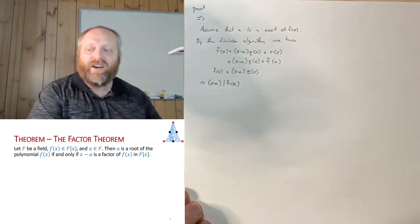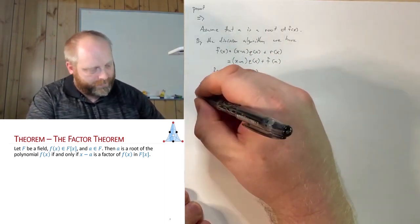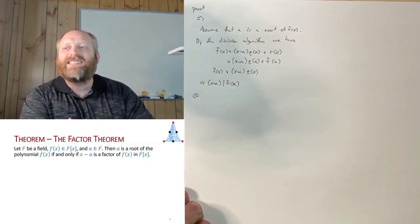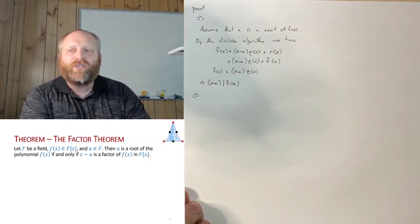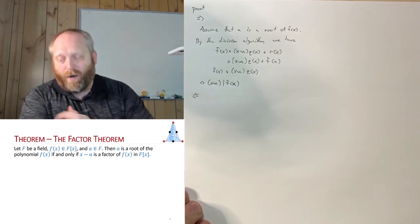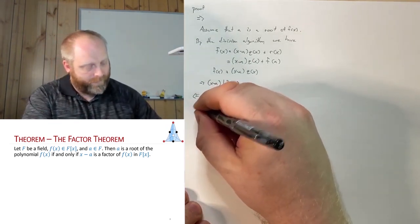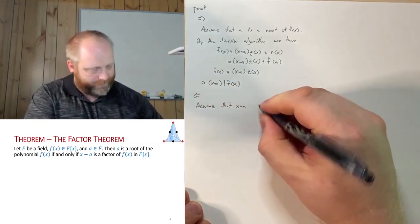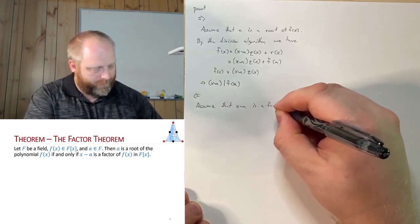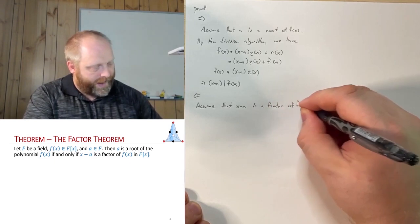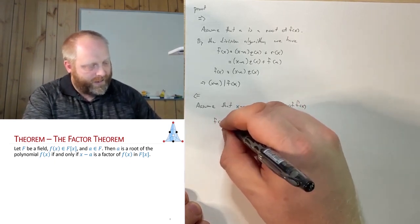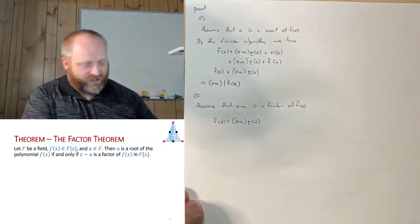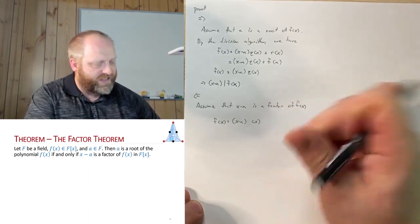Now we show the other direction. We assume that x minus a is in fact a factor of f(x), and we need to show that a is a root of that polynomial. Since x minus a is a factor, I can write f(x) as (x minus a)·g(x) for some polynomial — let's call it g(x) rather than q(x).